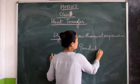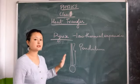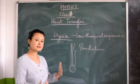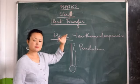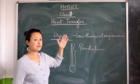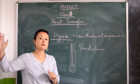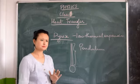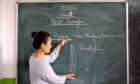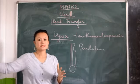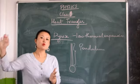Since the pendulum is made up of metal, during summer, because of the heat, it tends to expand — that means it becomes longer. And if it becomes longer, it will take more time to oscillate. So the time period will be more during summer.